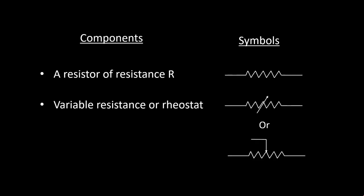Variable resistance or rheostat. Variable resistance or rheostat is a component used to regulate current without changing the voltage source. Next component is a voltage source.